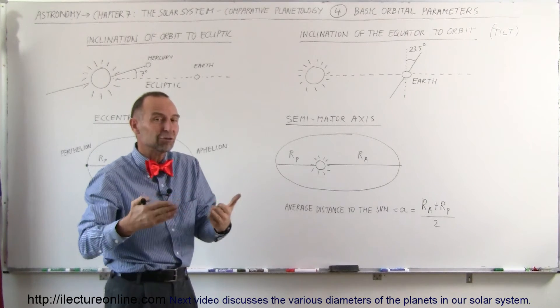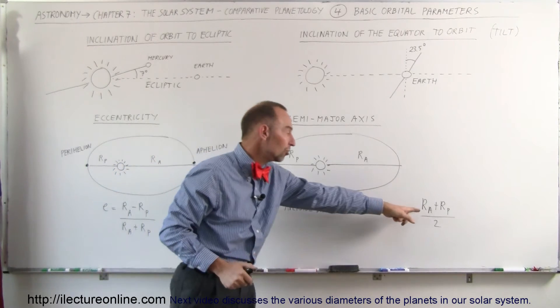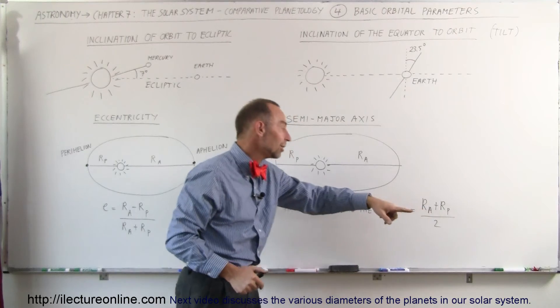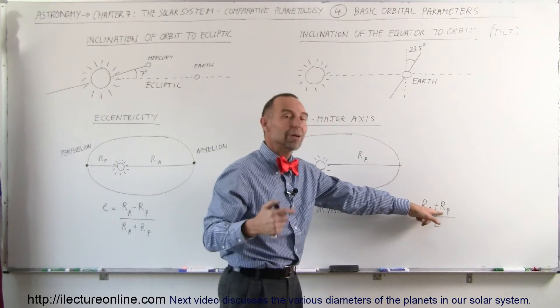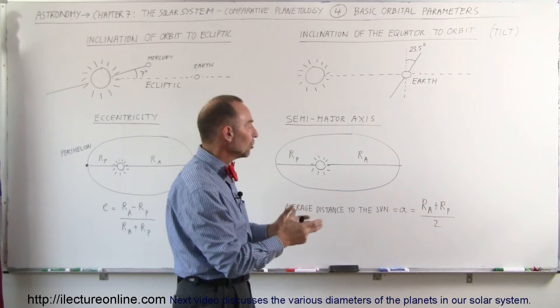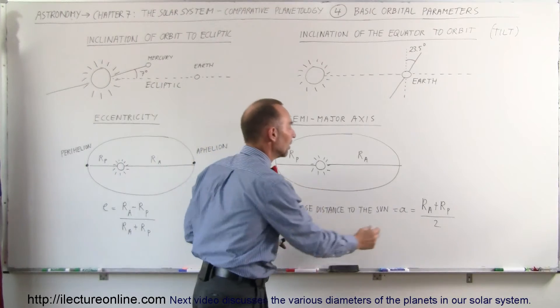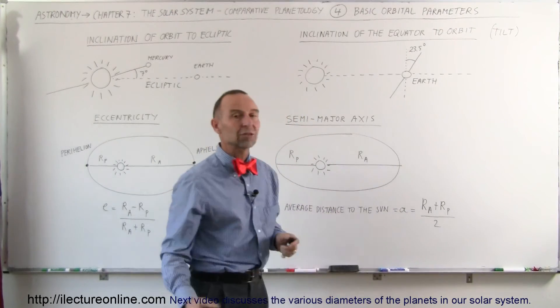So if you want to know how far a planet is on average from the Sun, you take the longest distance, the aphelion, and then you add that to the perihelion distance, and you divide it by two. That gives you the average distance of the Sun, which is usually denoted by the small letter A.